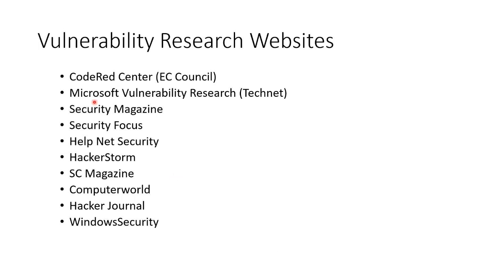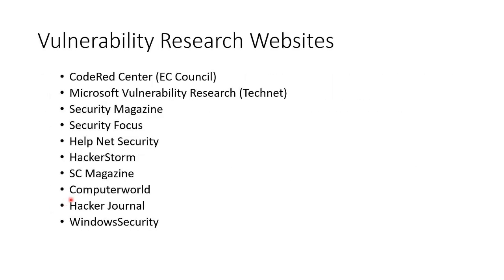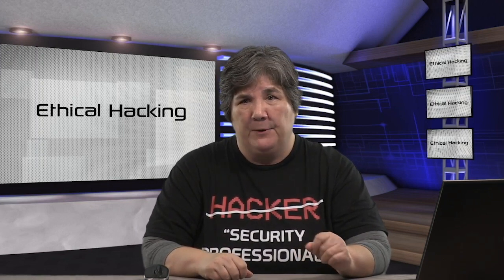Where can you go to do vulnerability research? EC Council has a Code Red center. There's Microsoft TechNet, Security Magazine, Security Focus, HackerStorm, HelpNet Security, SC Magazine, Windows Security, Computer World, Hacker Journal, SANS.org, Department of Homeland Security, and the FBI. Some of the smaller sites like Sophos and Trend Micro may come and go, but you need to be reading all of these things in general.